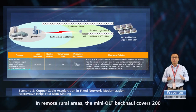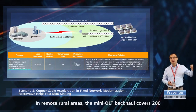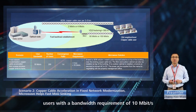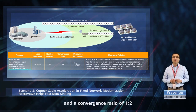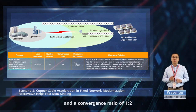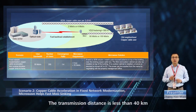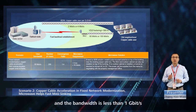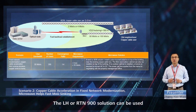In remote rural areas, the mini-OLT backhaul covers 200 users with a bandwidth requirement of 10 megabits per second and a convergence ratio of 1 to 2. The transmission distance is less than 40 kilometers and the bandwidth is less than 1 gigabit per second. The LH or RTN-900 solution can be used.